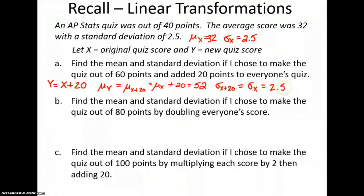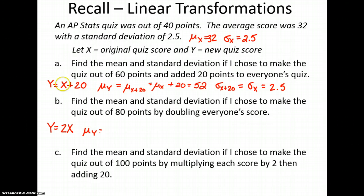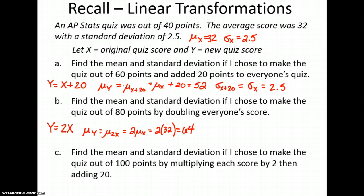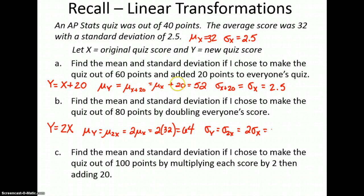Part B: find the mean and standard deviation if I chose to make the quiz out of 80 points by doubling everyone's score. So now we have Y equals 2X — we're going to multiply each individual score by 2. The mean of Y, or the mean of 2X, is going to be 2 times the mean of X, which is 2 times 32, which is 64. The standard deviation of Y is 2 times the standard deviation of X, or 2 times 2.5, which is 5.